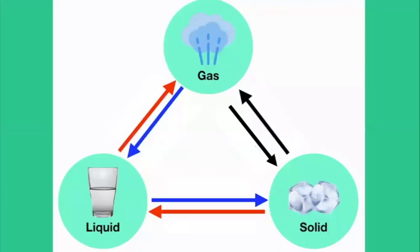All matter can change from one state to another. Heat is important for the change of states. When we heat up or cool down matter until certain levels, it will change its shape, size, volume, and state, but it's still the same matter. These changes can be reversed and matter will go back to its original state by heating or cooling.